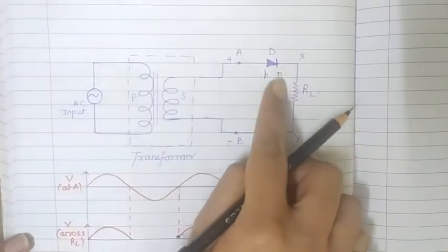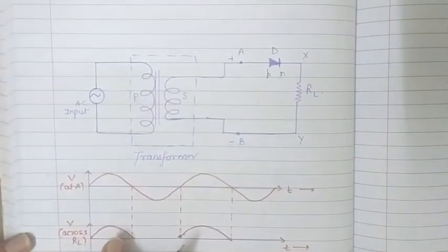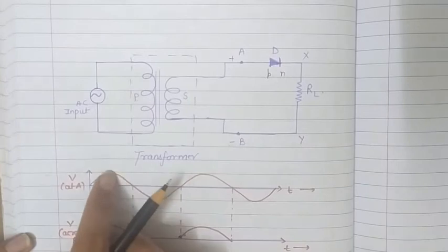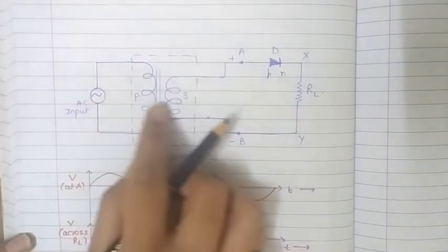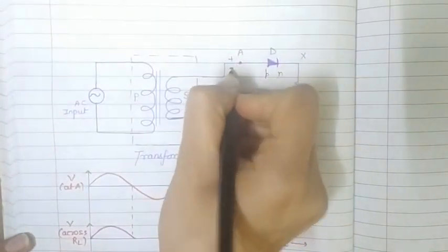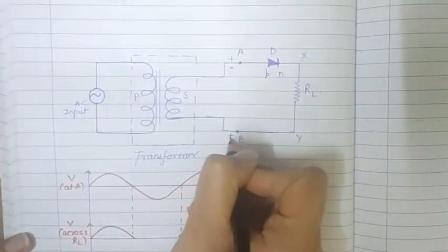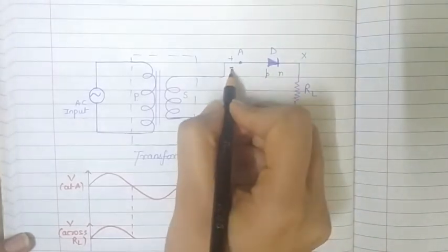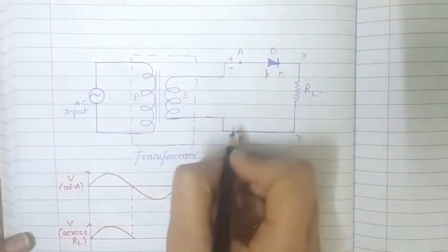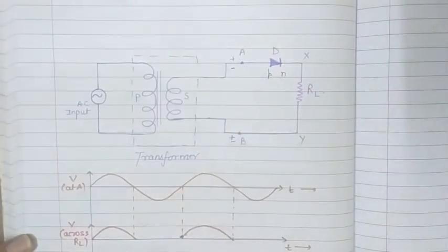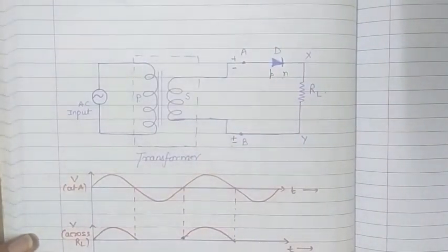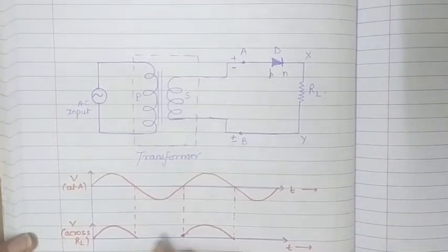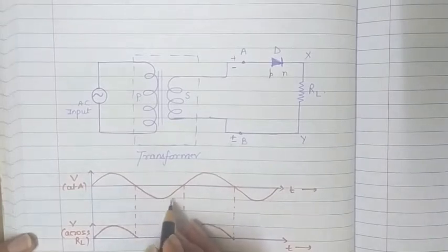After this positive half cycle we get the negative half cycle. When we get this negative half cycle, the polarity changes - A becomes negative and B becomes positive. Since A is negative and connected to P, and B is positive and connected to N, the diode is now reverse biased and will conduct no current, so we won't get any output during this cycle.